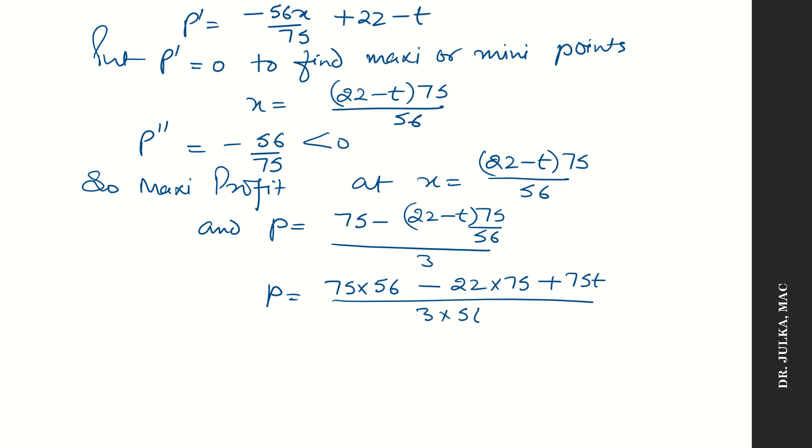After calculation we'll get p equals to 2550 plus 75t divided by 168, or we can say that it is equals to 425 by 28 plus 25 by 56 times t.